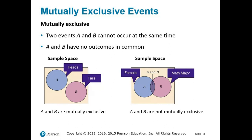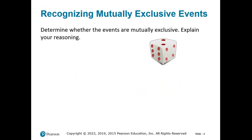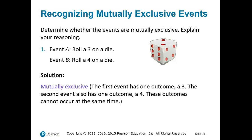Let's do some examples. Determine whether the events are mutually exclusive. It's impossible for those two events to happen simultaneously, so they are mutually exclusive. The first event has one outcome, a 3. The second event also has one outcome, a 4. These outcomes cannot occur at the same time.